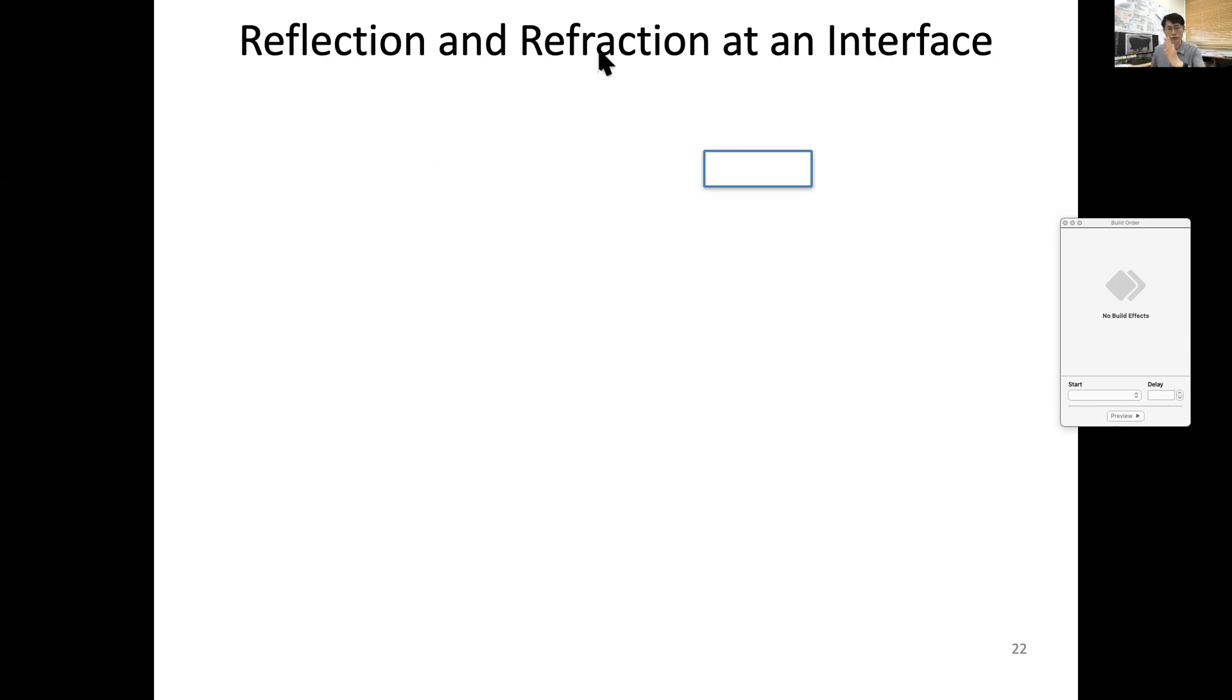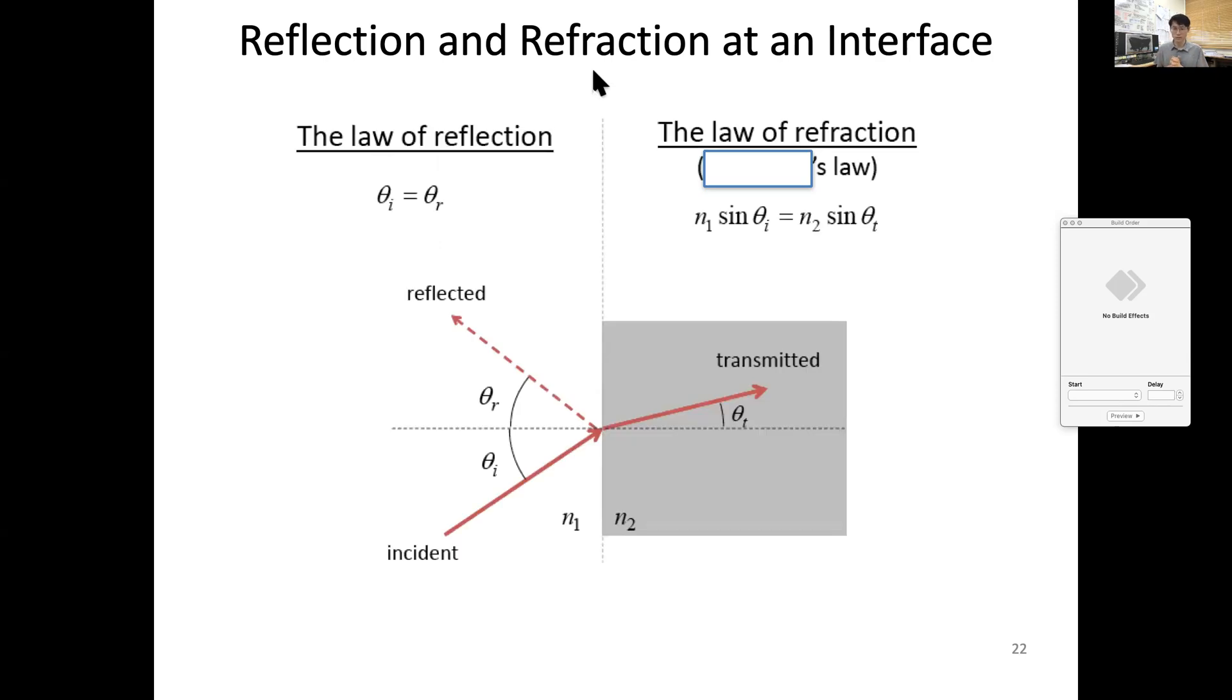For that, the basic one is reflection and refraction at an interface when a wave interacts—in this case, of course, light. So you already learned about this from previous years, I believe. There's an interface with refractive index of n1 entering into n2.